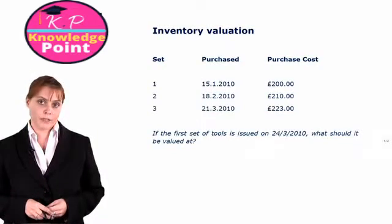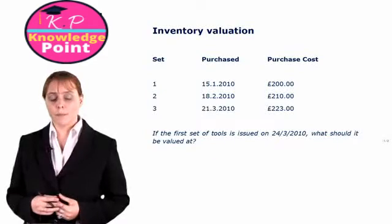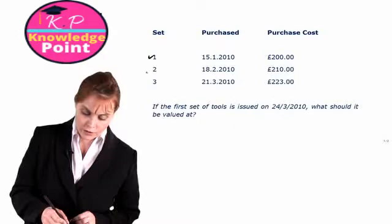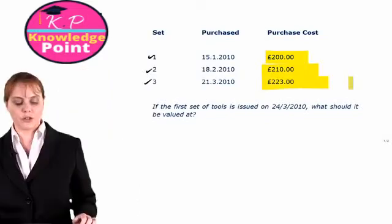That is the question we will be answering in these next few sessions. Let's look at a straightforward example. Suppose a company uses a particular material in their production process, and it purchases three units of this material throughout the first three months of the year. The purchase cost in January is 200 pounds, in February it's gone up to 210 pounds, and in March it's 223 pounds.